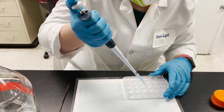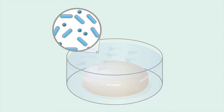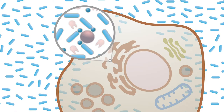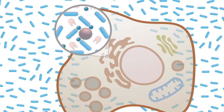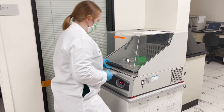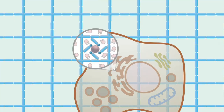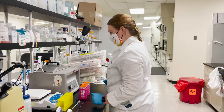When we perform CLARITY, the tissue is first embedded in a solution of hydrogen monomers and cross-linkers. The monomers and cross-linkers diffuse into the tissue, binding to the proteins and nucleic acids, but not to the light-scattering lipids. When this hydrogel tissue hybrid is heated, the monomers and cross-linkers polymerize into a stable hydrogel mesh, locking the proteins and nucleic acids in place. The light-scattering lipids can then be removed, allowing us to immunostain and image the tissues.